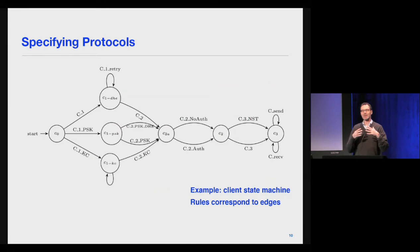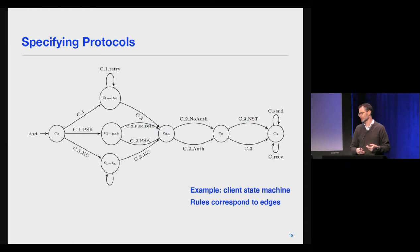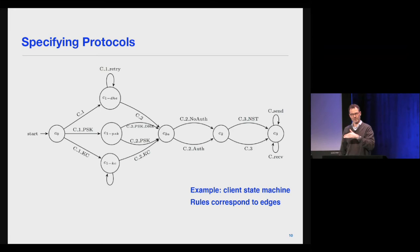In general, protocols have multiple rules for multiple roles — an initiator role, a responder role, a key server role. For example, the client state machine for TLS 1.3 would have a role automaton where each arrow corresponds to a multi-set rewriting rule. Complicated protocols can have quite a lot of these rules.